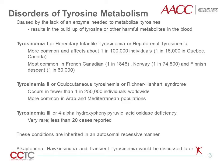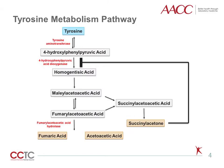Tyrosinemia type 3, or 4-hydroxyphenylpyruvic acid oxidase deficiency, is the rarest form, with very few cases reported in literature. It must be noted that tyrosinemias follow an autosomal recessive inheritance pattern, where an affected individual would need one of the mutated genes from each parent to have the disorder. Alkaptonuria, Hawkinsinuria, and transient tyrosinemia are also tyrosine metabolism disorders that will be discussed later in this presentation.